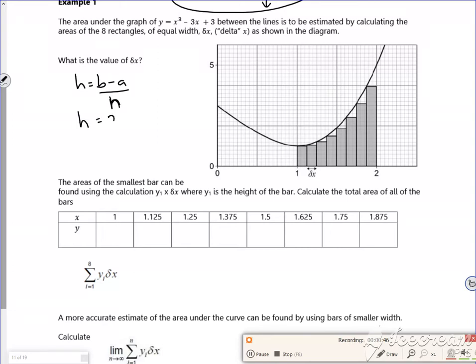So h is, b is 2, a is 1, because I'm doing an integral between 1 and 2. And I've got 1, 2, 3, 4, 5, 6, 7, 8 rectangles. So I've got 2 minus 1 over 8, so it's an eighth. So the width of each of these rectangles is 1 over 8.